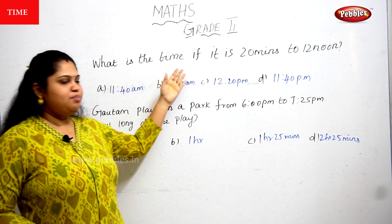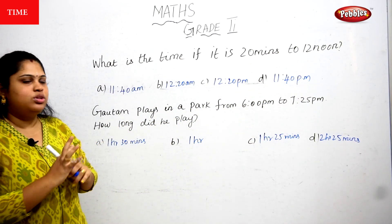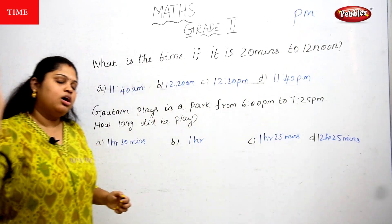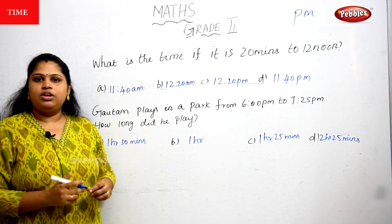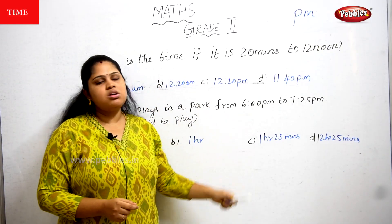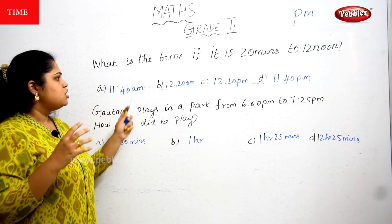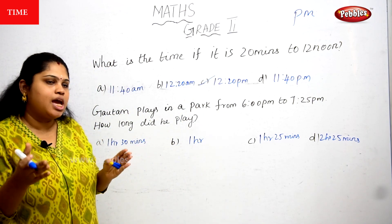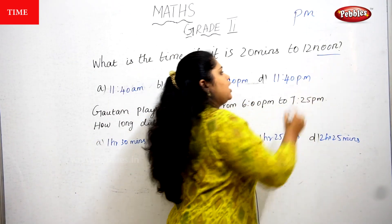Next question: what is the time if it is 20 minutes to 12 noon? Noon means afternoon — that is called PM. So 20 minutes to 12 noon means 12:20 PM is the right answer. You cannot say 12:20 AM because it is noon, and noon means PM.